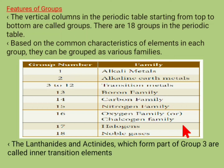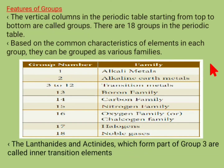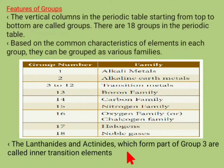In groups, elements in the same group contain the same number of electrons in the valence shell. For example, the first group elements contain only one electron in the valence shell, so they have valency one. They have similar chemical properties, but the physical properties — such as boiling point, melting point, and density — vary gradually. The lanthanides and actinides are placed at the bottom of the periodic table as inner transition elements, and they form part of group 3.